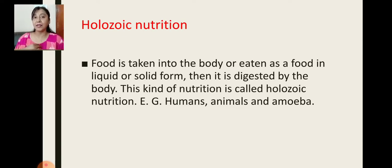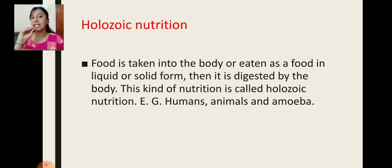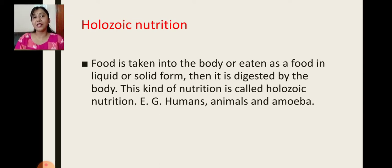We humans eat food, it gets digested, then it is absorbed, the energy is used for various purposes, and later the undigested food is released out of the body. But in saprophytes, they grow on dead and decaying organic matter, release digestive enzymes on that matter, the food gets digested externally, and later the saprophytes absorb the food. So digestion happens outside the body — that is totally different from holozoic nutrition.